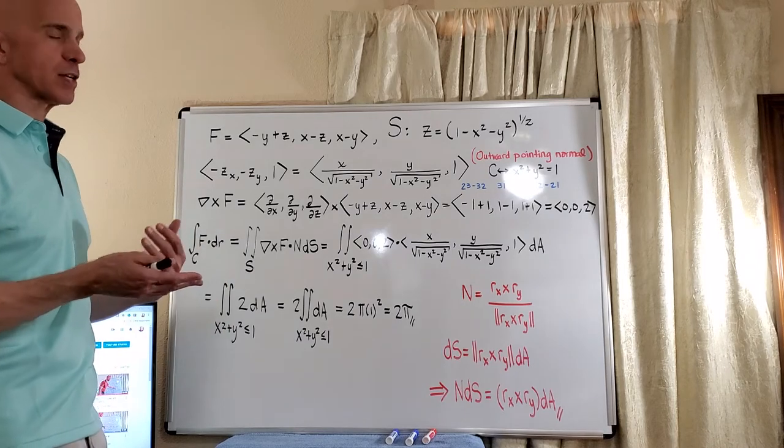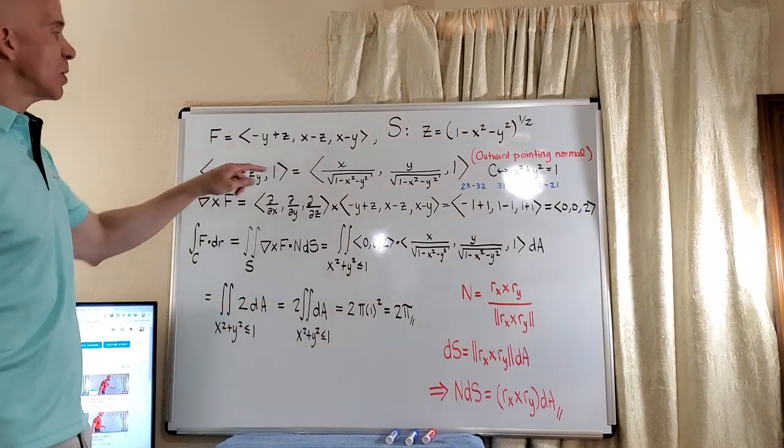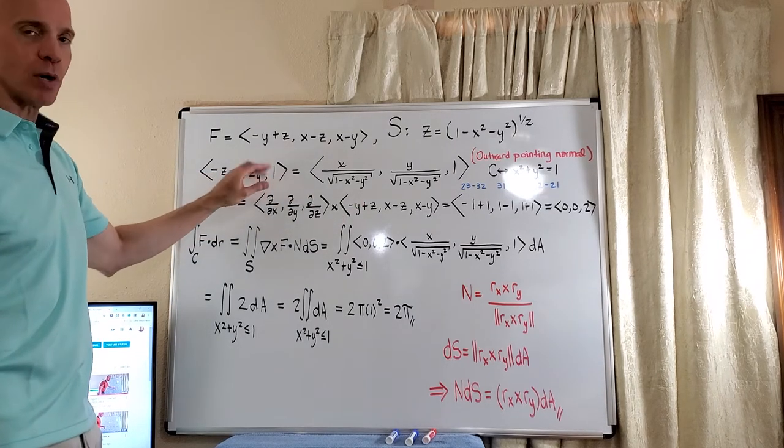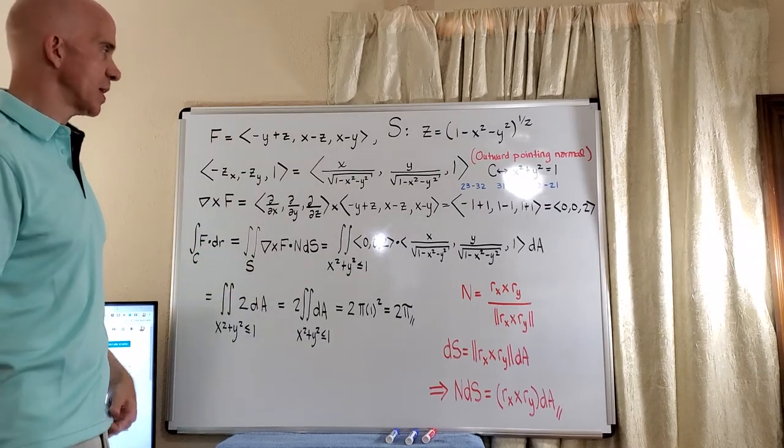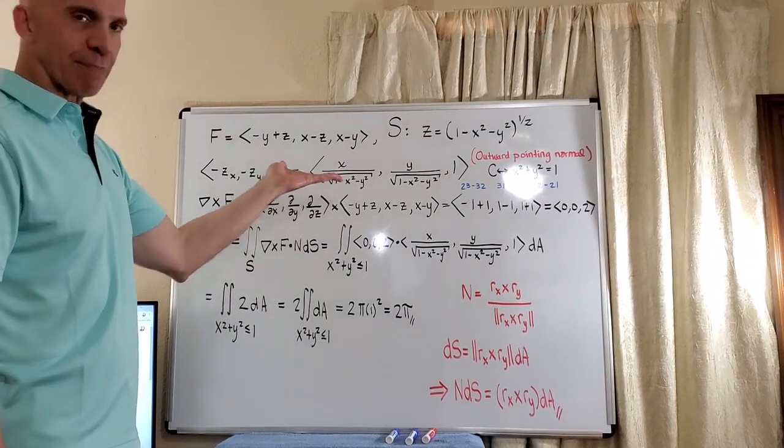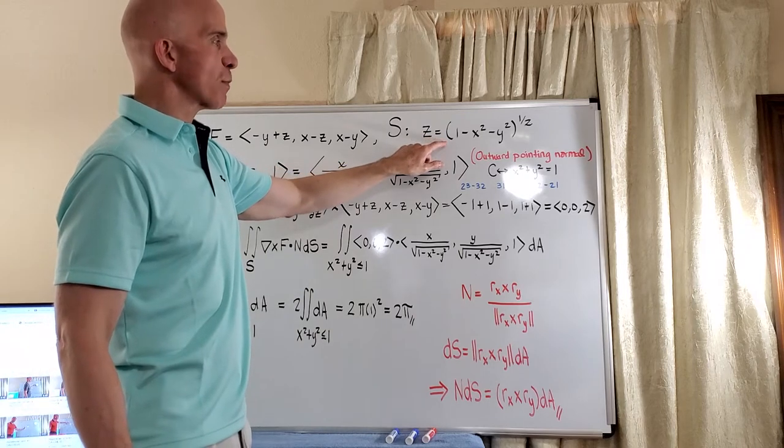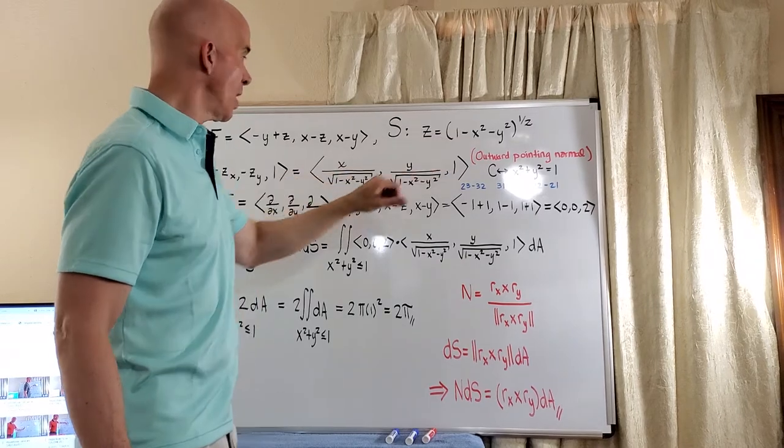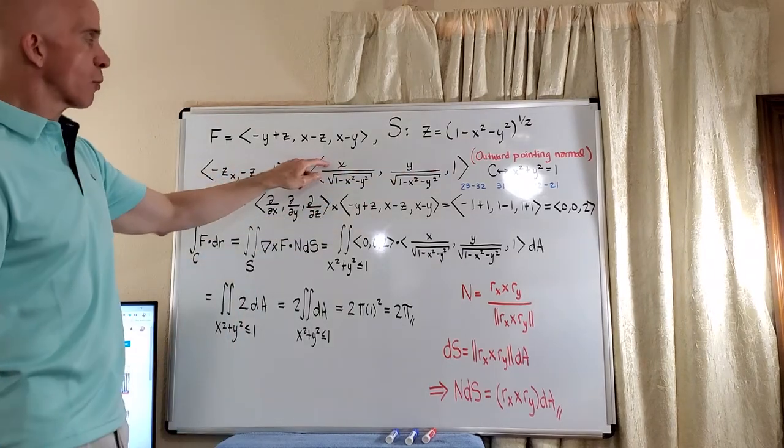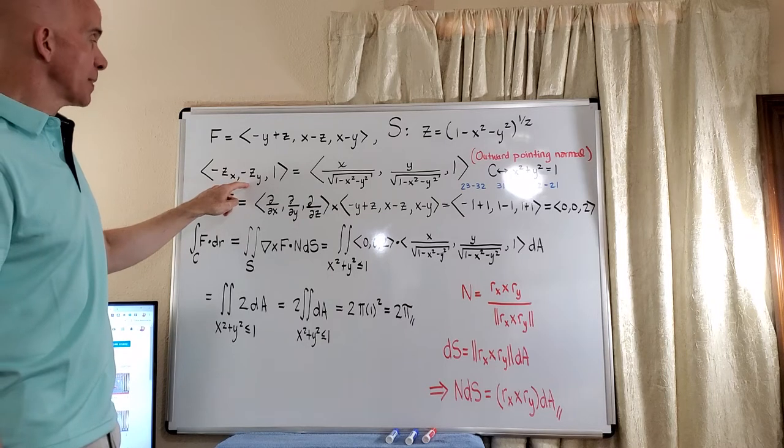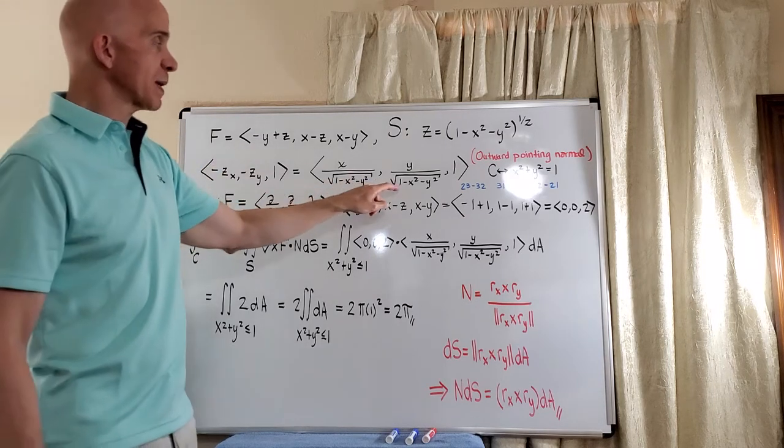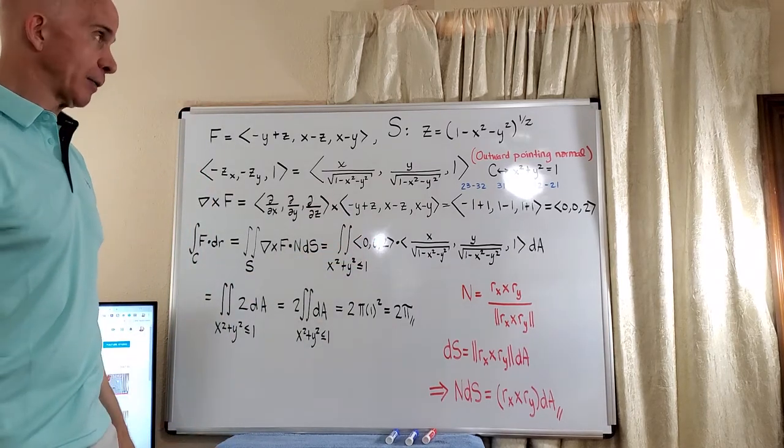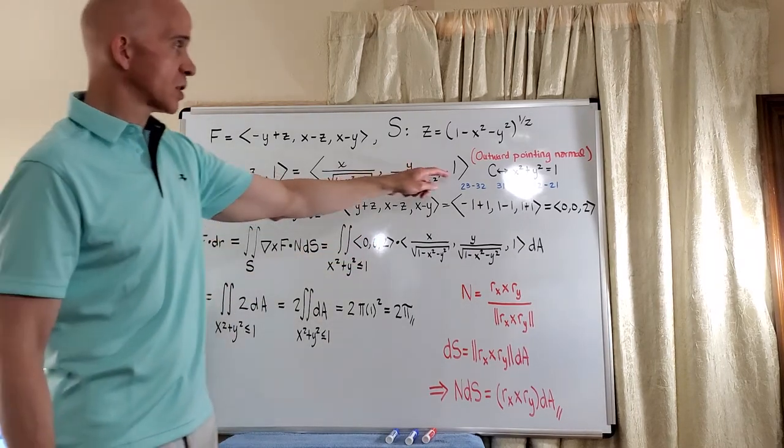And then, of course, with the surface integral, we're going to have a region. Now, when we look at the normal, we look at negative zx, negative zy comma 1, a very common computation that we've done many times. And again, back to what we've done many times, we take the x partial here. Now remember, this will give us the negative x divided by the radical, but of course, the negative here will remove that. And in a parallel computation, the negative zy will just be y divided by the radical 1 minus x squared minus y squared. And then, of course, the 1 just comes in for free.